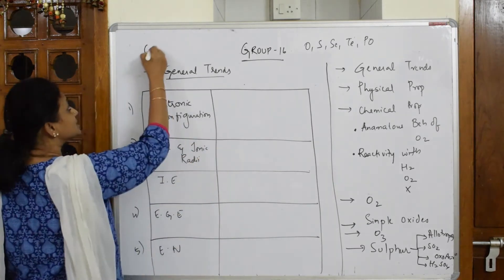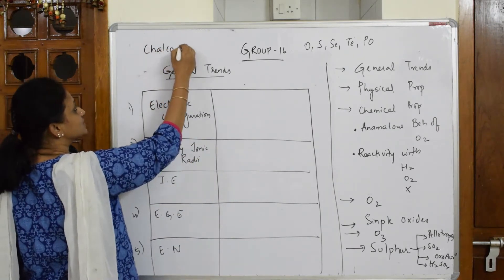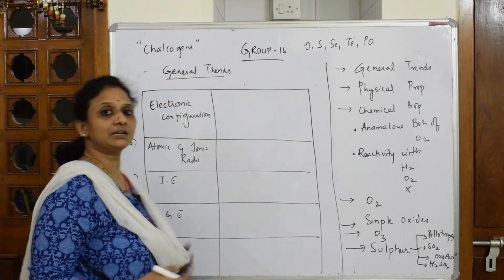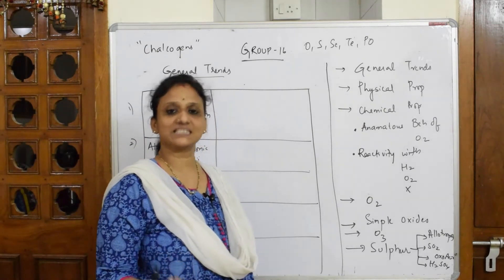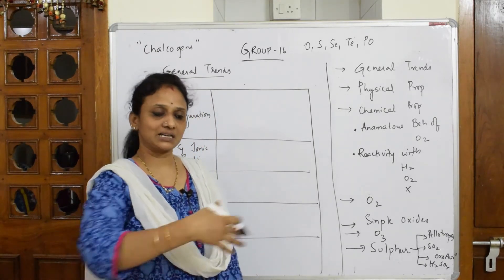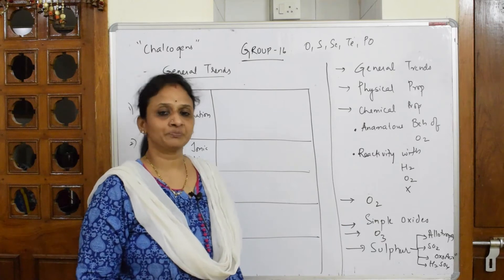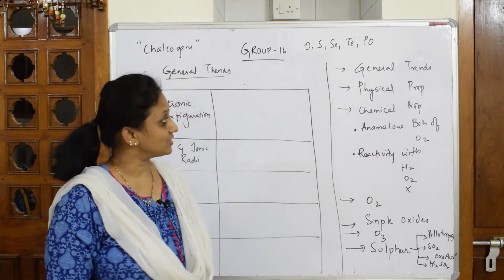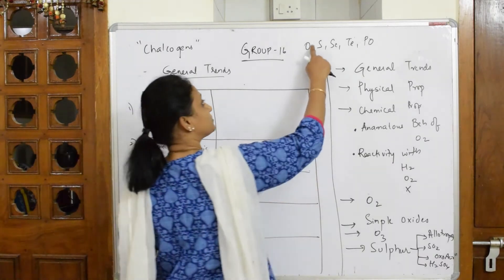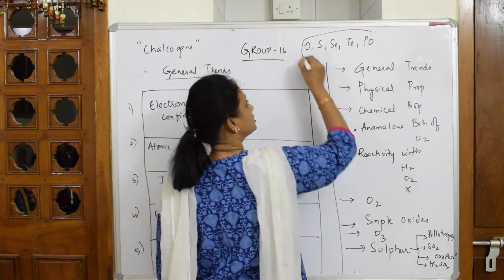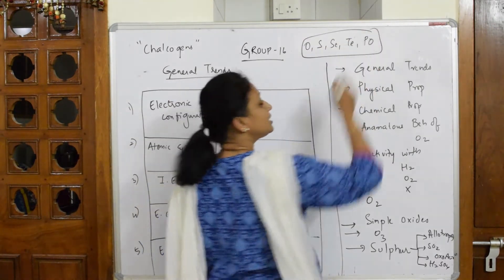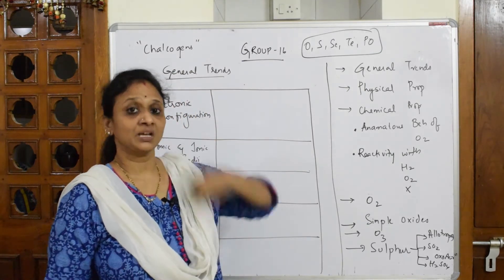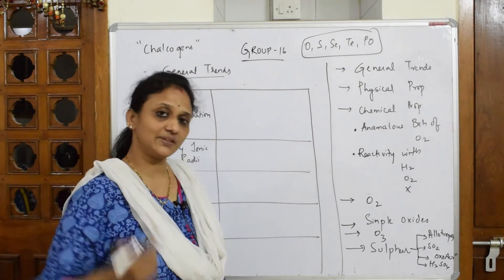What does chalcogen mean? Chalcogen refers to a group where the metal ore exists in the form of oxides and sulfides. If a particular ore exists in sulfide form or oxide form, we call it a chalcogen. So in this chapter, oxygen, sulfur, selenium, and tellurium are the main elements we are going to study.